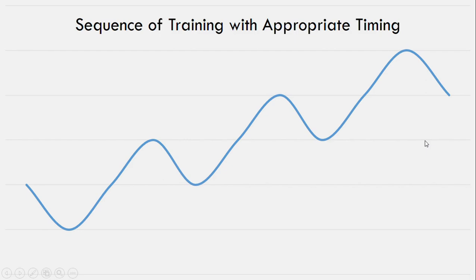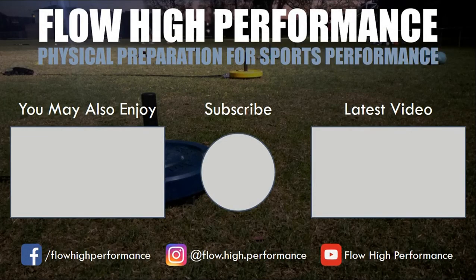This is the most simplistic model of adaptation and recovery. In reality there are a lot more factors involved. Nonetheless, the basic principle of training still remains the same since the foundation of this general adaptation model — we still need to do a training session, allow ourselves enough recovery to adapt, and follow with more training sessions at the appropriate time. Thanks for watching, and remember to subscribe if you haven't already.